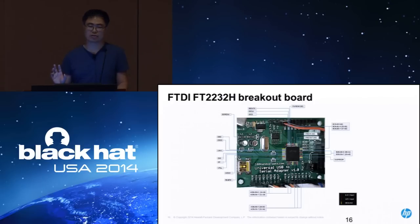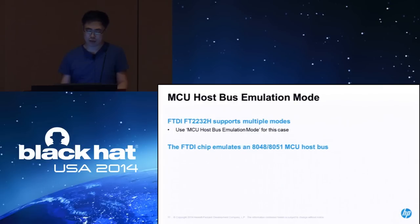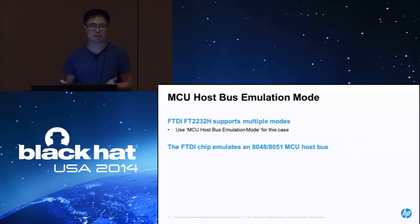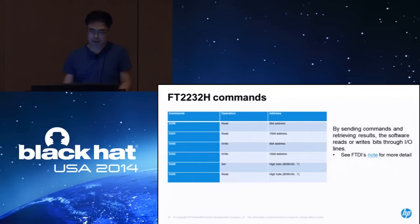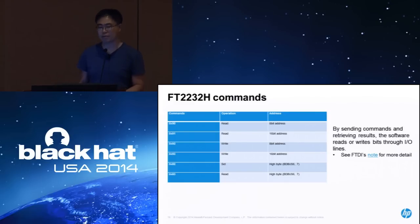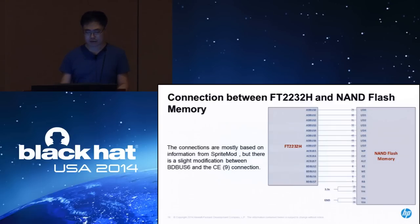The breakout board extends the chip to have some basic functionalities. One of the modes we're using is the MCU host bus emulation mode — it emulates the bus from an 8051 MCU, a chip from the 1980s that's been on the market for a long time. The commands you send to the chip are for reading and writing. The connections between the FTDI chip and the NAND flash are based on the schematic from SpyMode, though I tweaked it a little — for example, the chip enable pin was not connected originally, but it's connected in my implementation for some special operations.